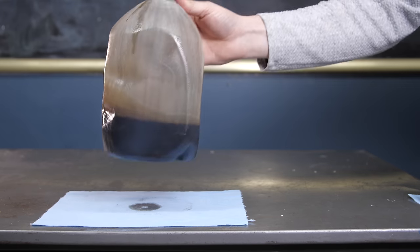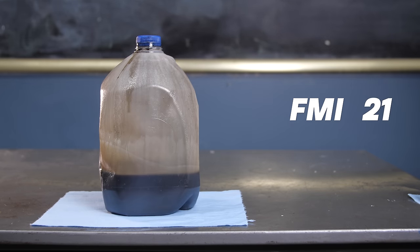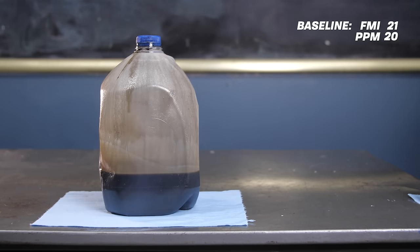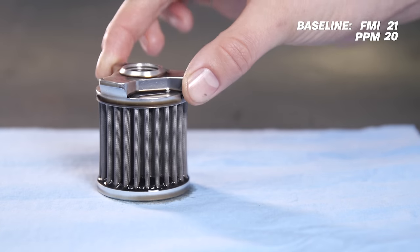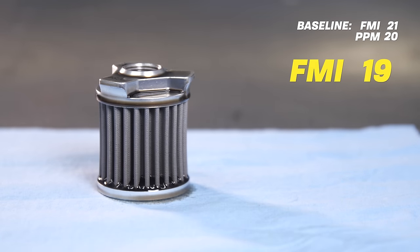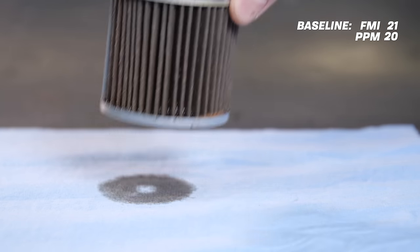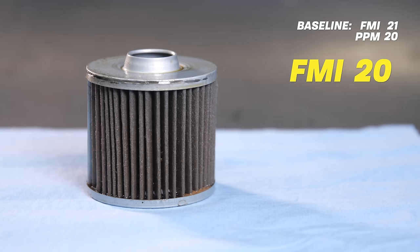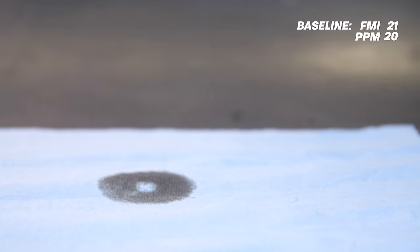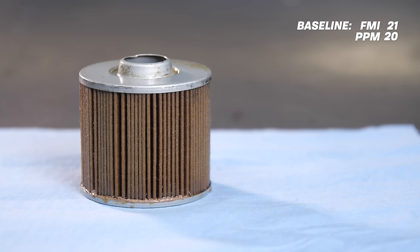The raw oil had a ferrous metal index of 21 and 20 parts per million of contaminants. Our steel filter got ferrous metals down to 19 but let slip all 20 PPM. Fiberglass only dropped to 20 on the PQ index but 18 on contaminant parts per million. While paper was again the victor—it filtered our ferrous metals down to 16 and contaminants also to 16.